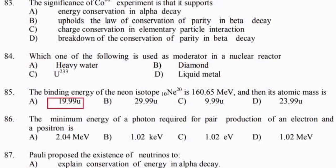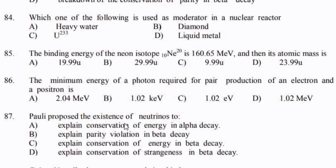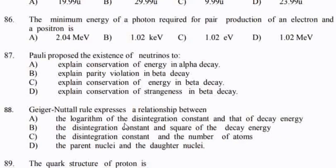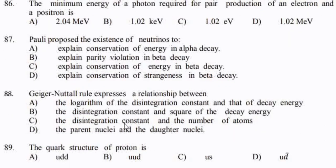The minimum energy of a photon required for pair production of electron and positron — option B, and the answer is 1.02 MeV.